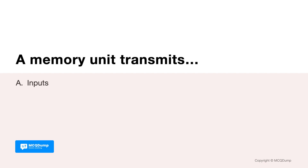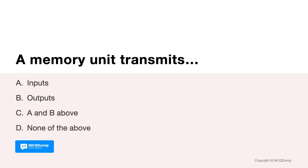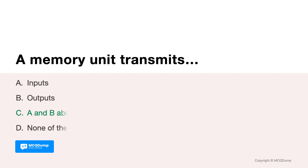A memory unit transmits inputs and outputs both. The final results of processing are also stored in the memory units before these results are released to an output device.